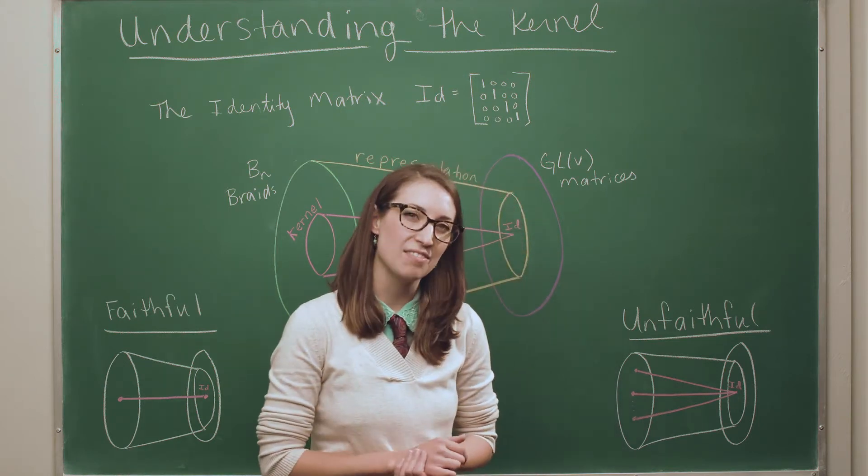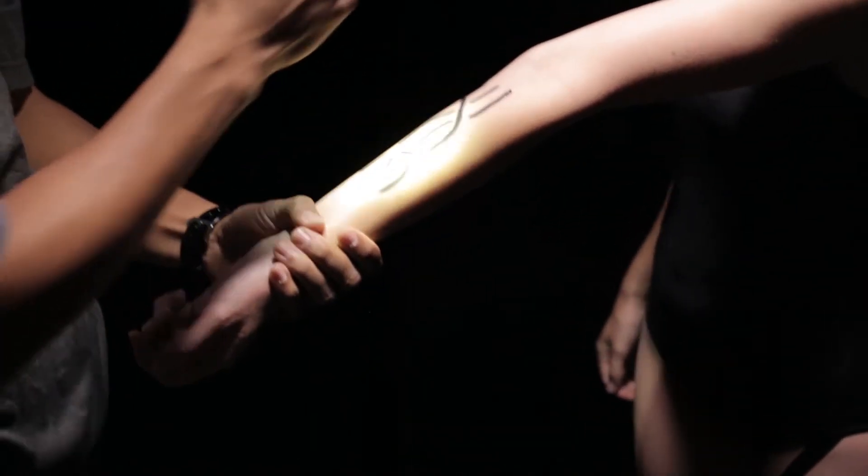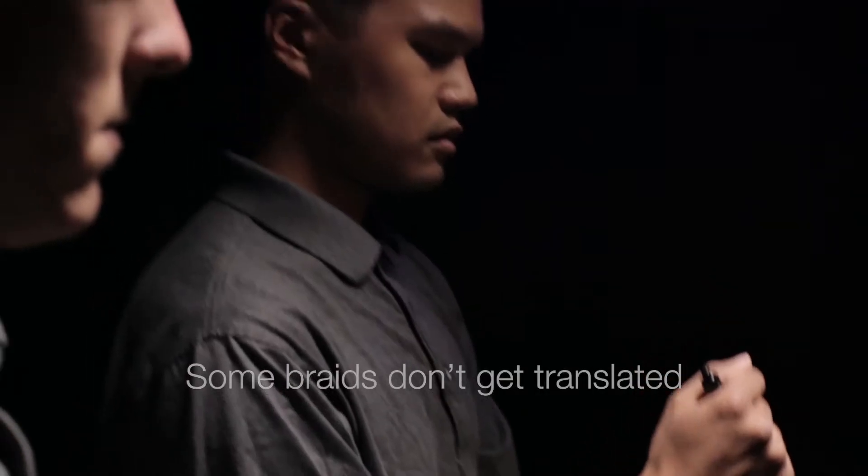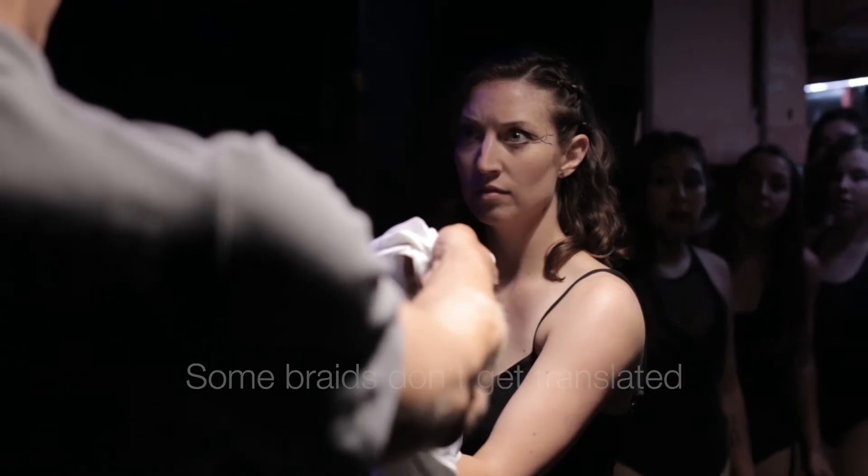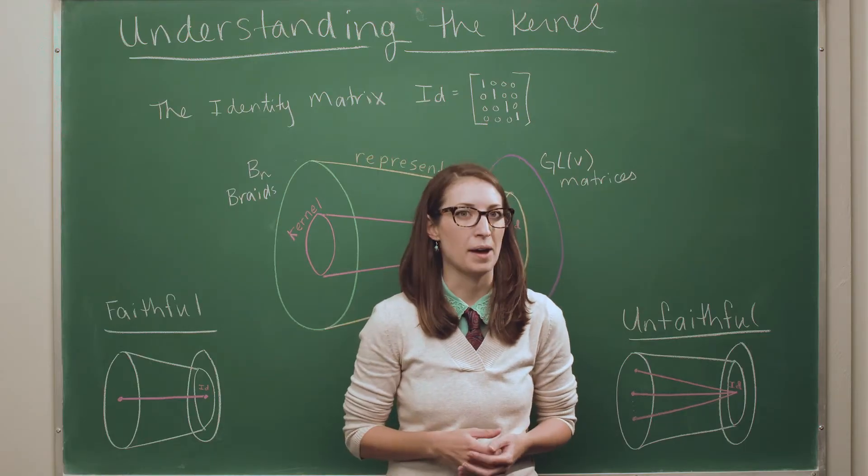So we saw in the second half of the video, there was a kernel, a braid, who tried to get into the matrix. They scanned her braid and they rejected her. They didn't let her in and she was taken away and labeled the kernel. So let's sort of see what the kernel is all about.